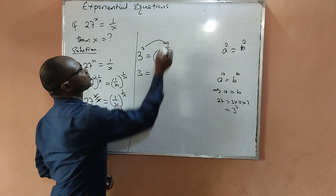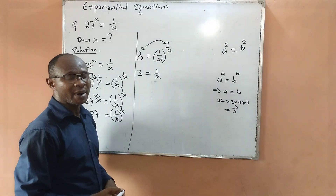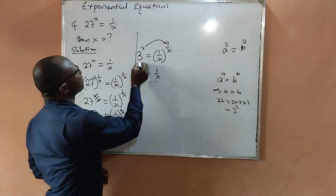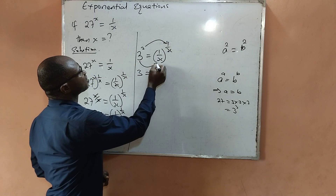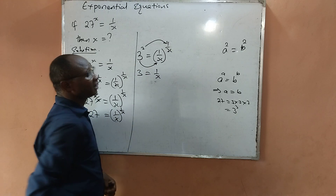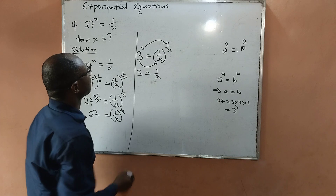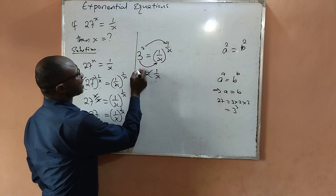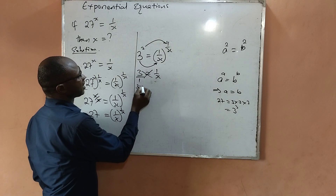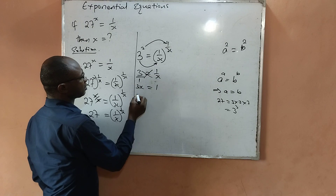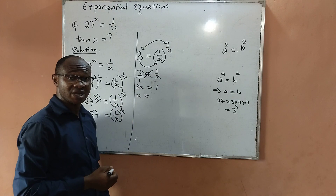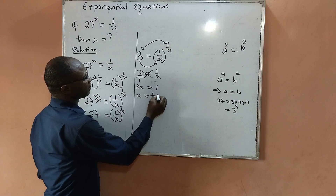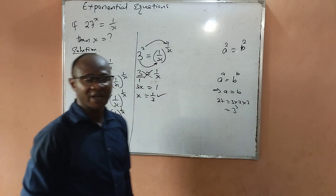We can say that 3 equals 1 over x. This is just like 3 over 1, and by cross multiplication, x times 3 equals 3x, and 1 times 1 equals 1. Dividing both sides by 3 means that x is equal to 1 over 3. This is the value of x.